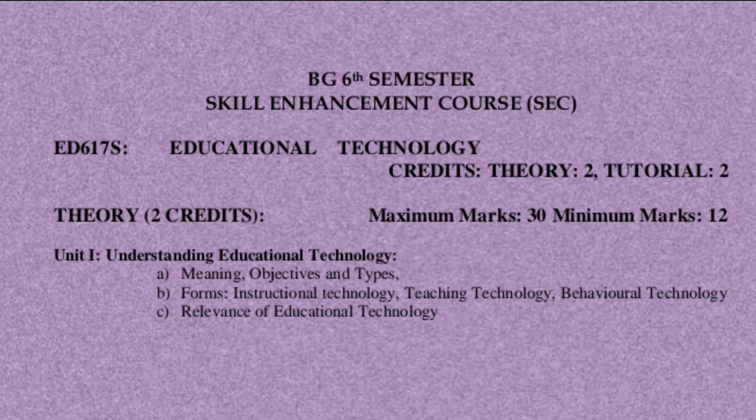It has a total of two units. The first unit is Understanding Educational Technology. It has three parts: meaning, objectives, and types. The forms include instruction technology, teaching technology, and behavioral technology.